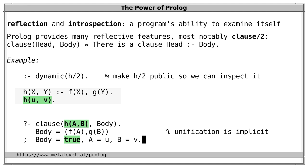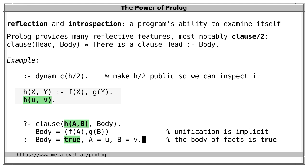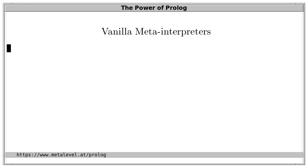For facts, the body is the atom true. We see that unification happened implicitly: this answer tells us that the arguments of the fact are the atoms u and v, and the variables used in the query are now unified with these arguments. So 'clause' lets us inspect the entire predicate definition — all clauses, facts and rules. Now let's finally implement a meta-interpreter.